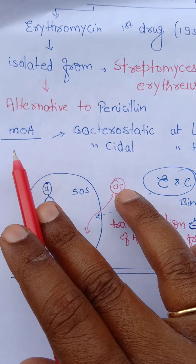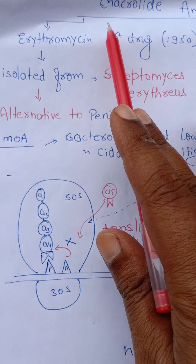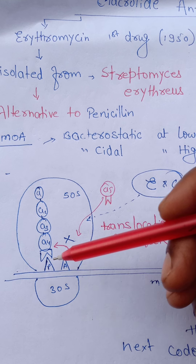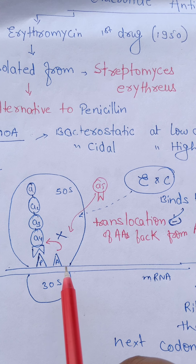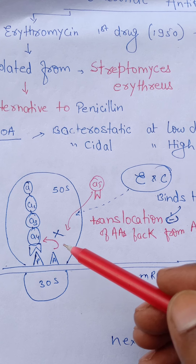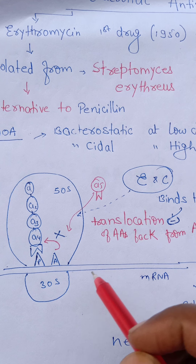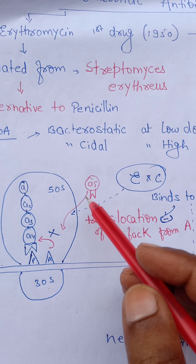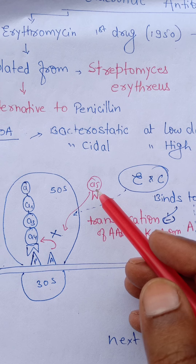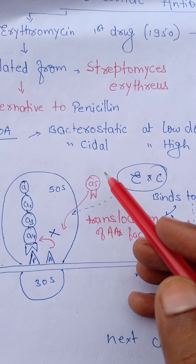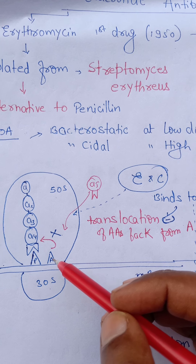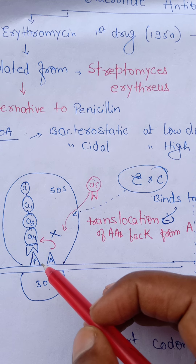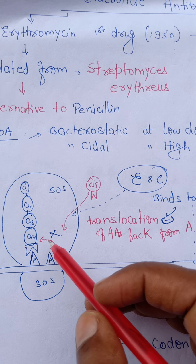Now we will discuss the mechanism of action of these macrolide antibiotics. As discussed in earlier classes, protein synthesis occurs involving mRNA, the 30S ribosome, and the 50S ribosome. Newer amino acids get attached to the acceptor site (A site) and an elongated chain is formed on the acceptor site.